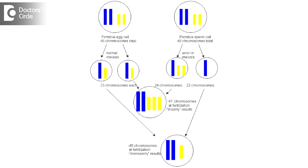It depends on what was positive in the previous pregnancy. If there was chromosomal abnormality in the baby, we need to find out whether it was a recurrent chromosomal abnormality or a single finding. We should also check whether the parents' karyotype shows any chromosomal abnormality and if it is a recurrent issue. Management depends entirely on the findings from the last stillbirth.